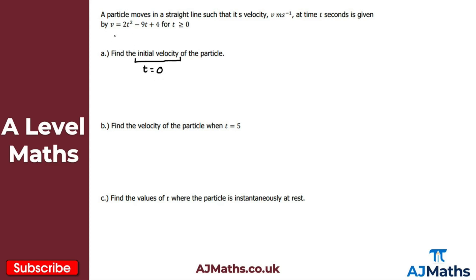All I need to do here is substitute t equals zero into our quadratic. So we get v is equal to two lots of zero squared minus nine lots of zero plus four. Well, in that case, this will be equal to zero, this will also be equal to zero, I just get left with four here. So the initial velocity of the particle is four meters per second. That's our solution to part A.